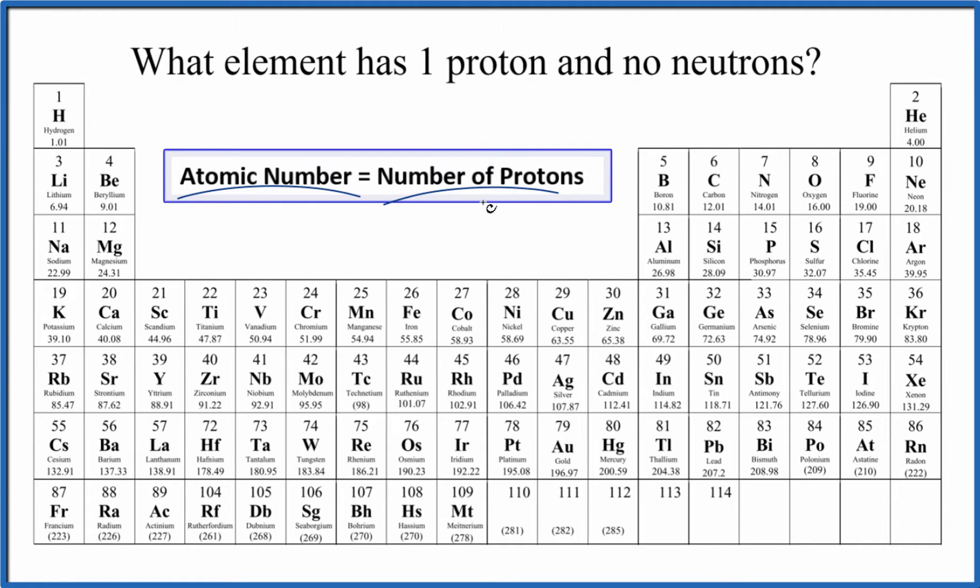If we can find one proton, atomic number one, then we'll know which element has just one proton and then no neutrons. The atomic number is the number right above the element symbol. It's always a whole number, and here we have one.